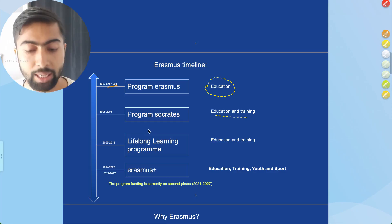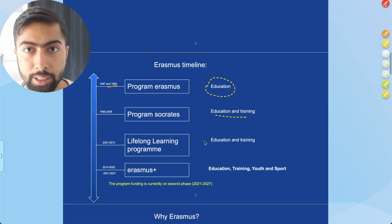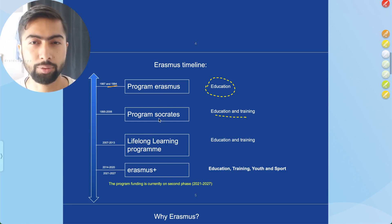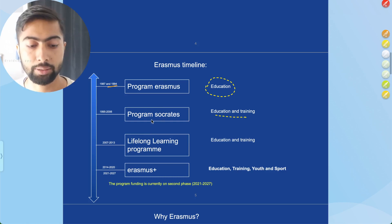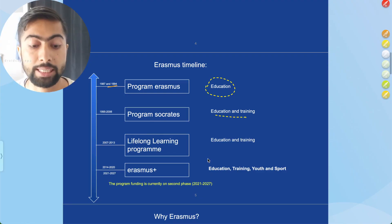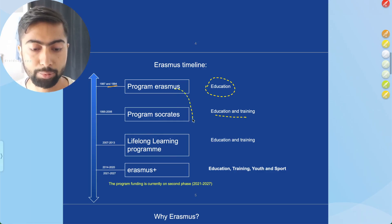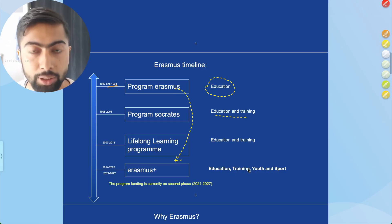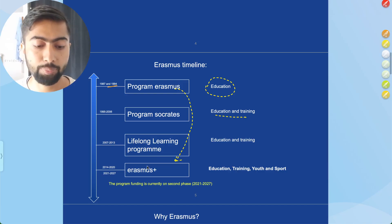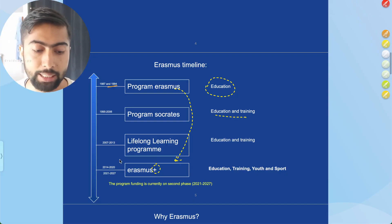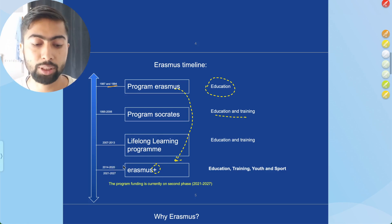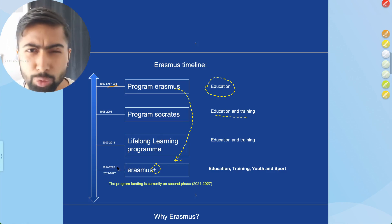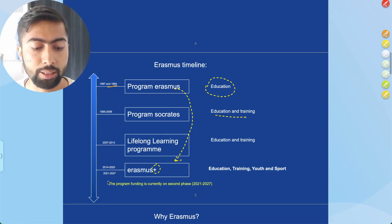Over the period, the Erasmus program became so popular and impactful compared to other programs that they extended it — not only covering education but also training, youth, sport, and language. So they renamed it Erasmus Plus. The first phase of the Erasmus Plus program ran from 2014 to 2020.